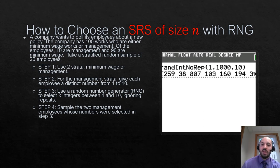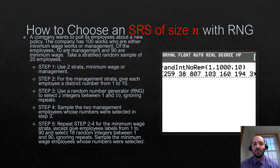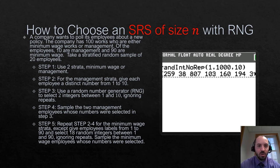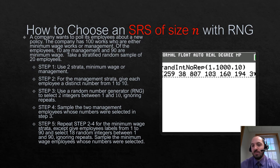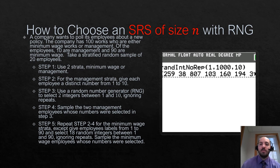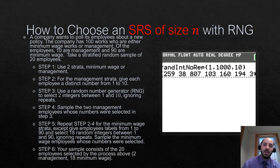Then you repeat this for the minimum wage employees. Our minimum wage employees are larger, so we label them one through 90 because there are 90 of them. We're going to select 18 random integers between one and 90, ignoring repeats, because we can't have the same person twice. Then we sample those employees whose numbers were selected. Our sample is now complete — we'll have 20 people: two for management and 18 for minimum wage.